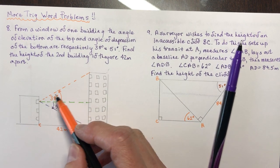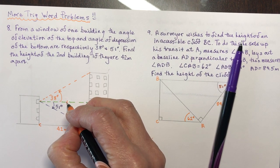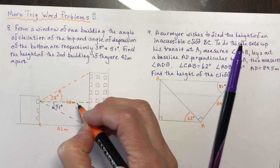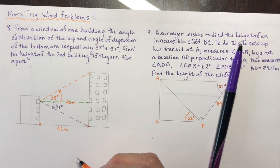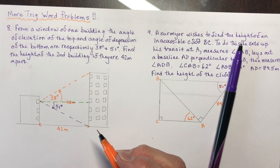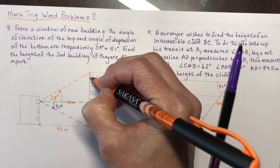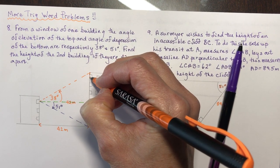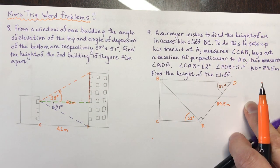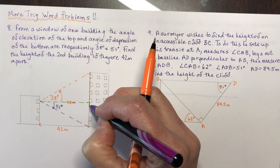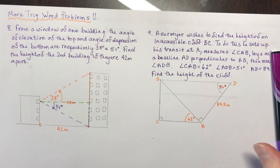This is also 42 meters here — the same distance between the two buildings, whether up here or down here. The height can be made up of two parts: this upper line and this lower line. If I add those together, that gives me the entire height of the building.